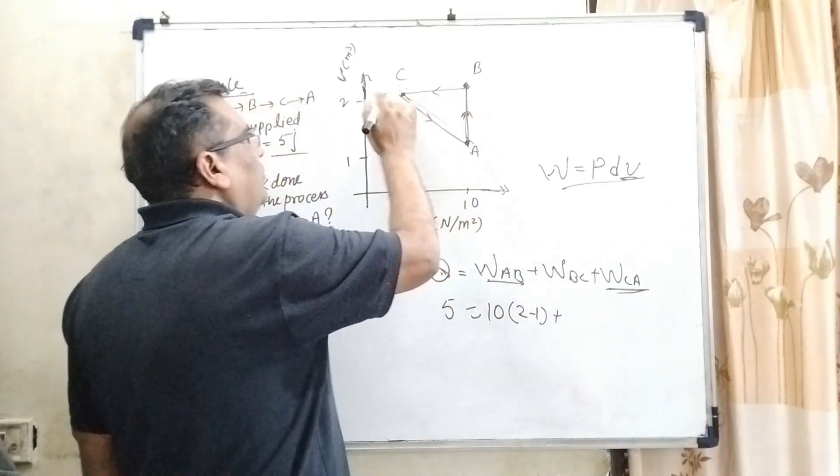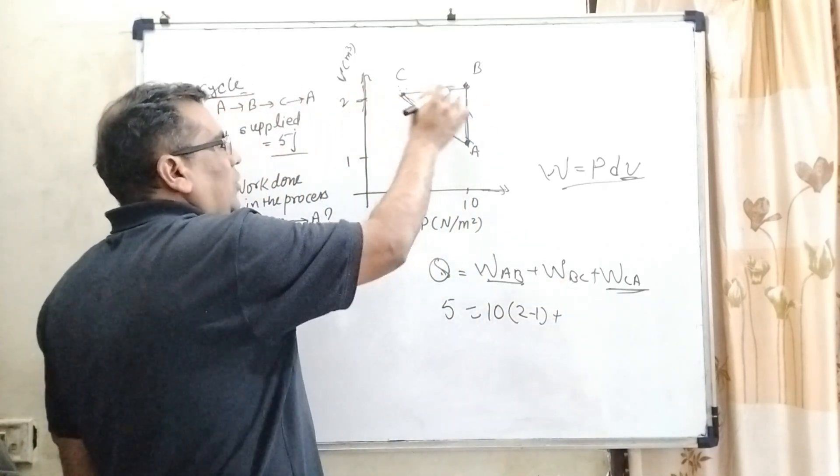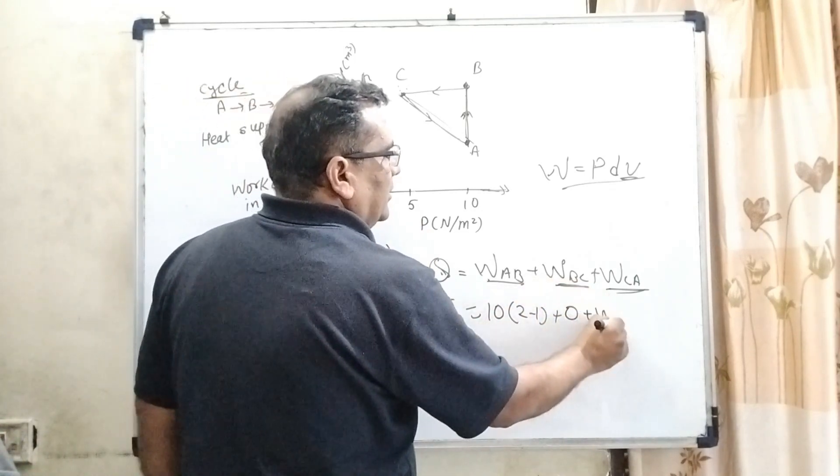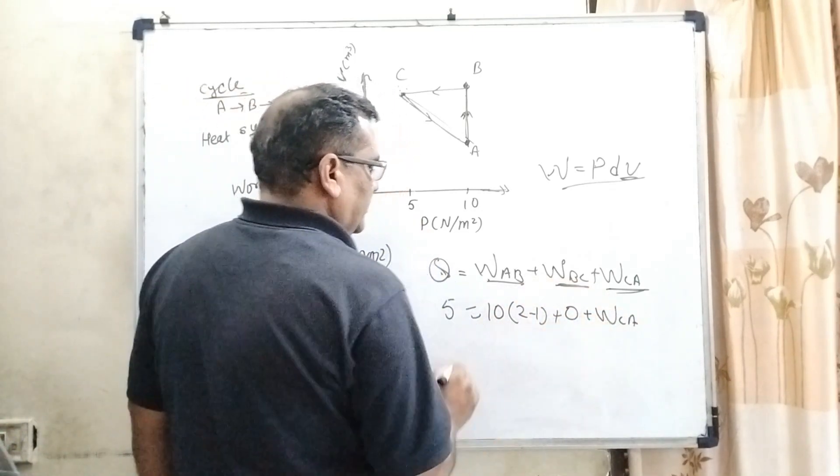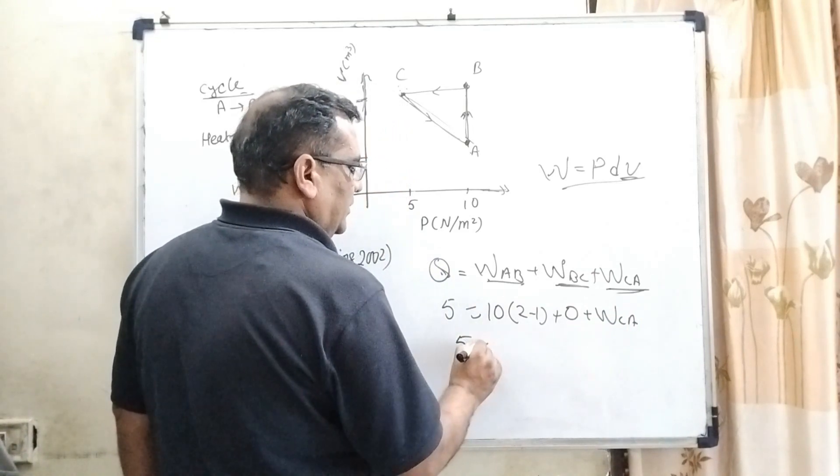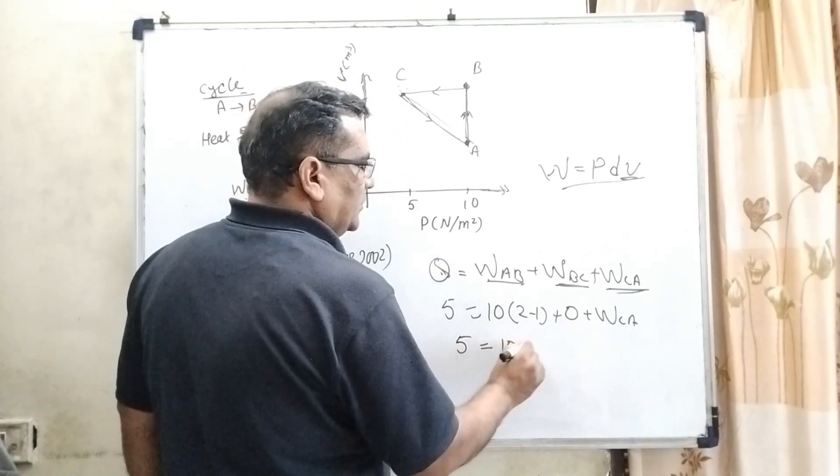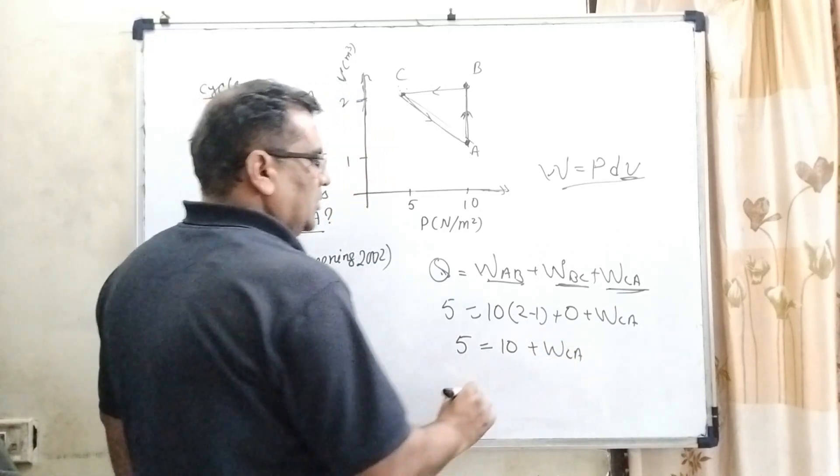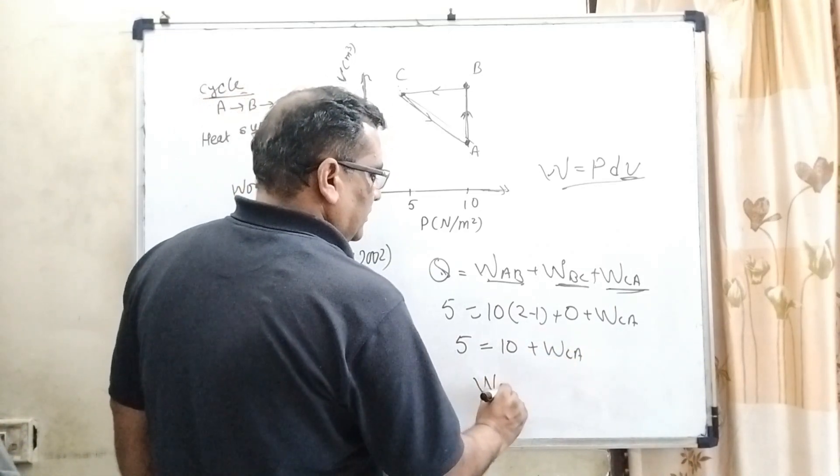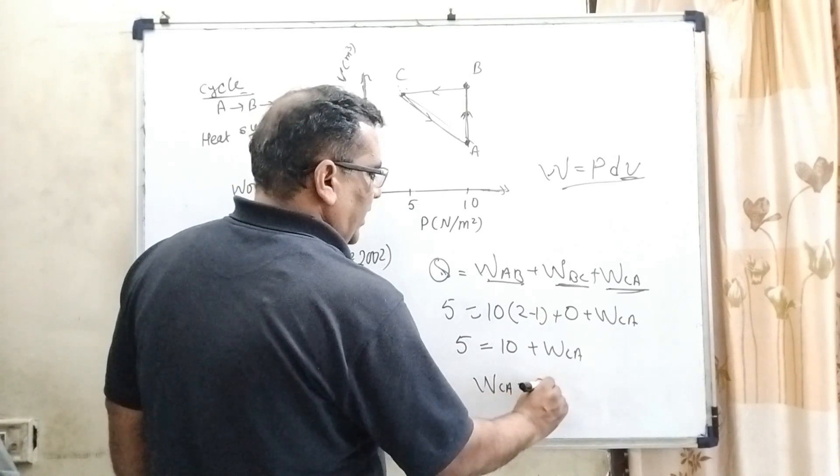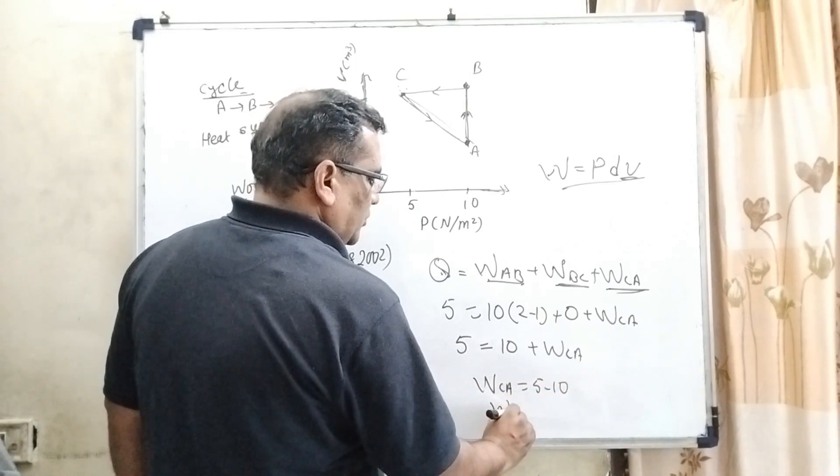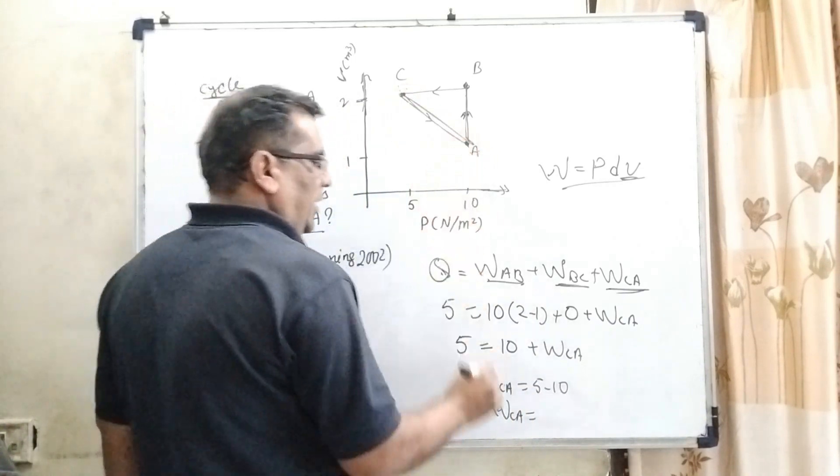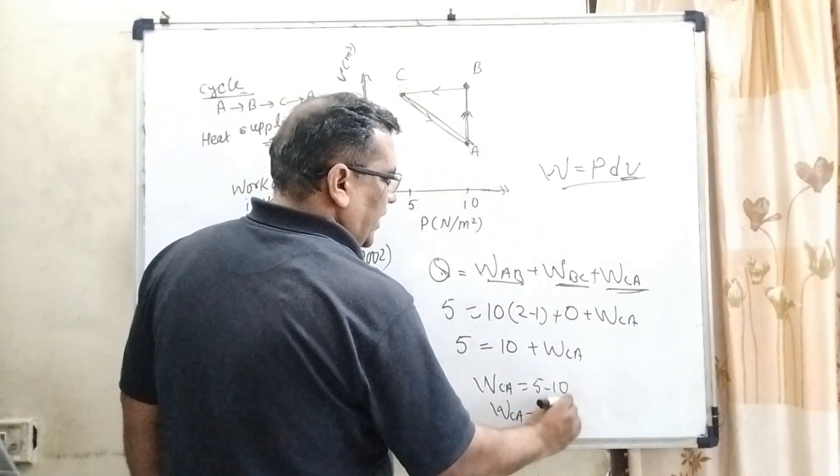For B to C, we can see that there is no change in volume, so the amount of work done here is 0. And this value we have to calculate. So 5 equals 10 plus W_CA. Therefore, 5 minus 10, so here the amount of work done C to A is minus 5 joules.